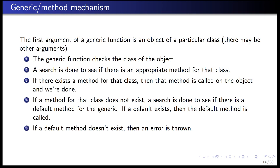The first argument to any generic function is an object of a particular class. The procedure for dispatch — both for S3 and S4 — is: the generic function checks the class of the object and searches for a method designed specifically for that class. If found, it calls that method. If no specific method exists, it searches for a default method, which is called on anything for which no other method exists. If there is no default method either, you get an error.